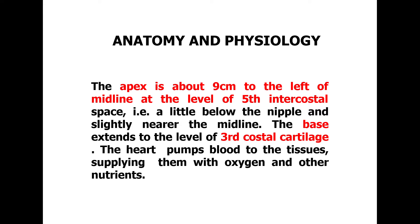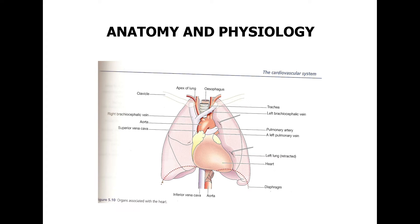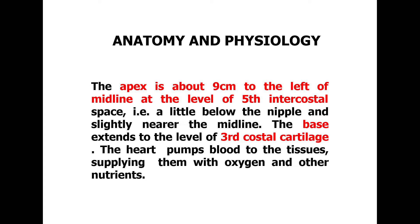Next, the portions of our heart — there are two portions. First is the apex portion and second one is the base portion. Where exactly is the base and apex located? The apex is about 9 cm to the left of the midline at the level of the 5th intercostal space. The location of the base of the heart is at the level of the 3rd costal cartilage.